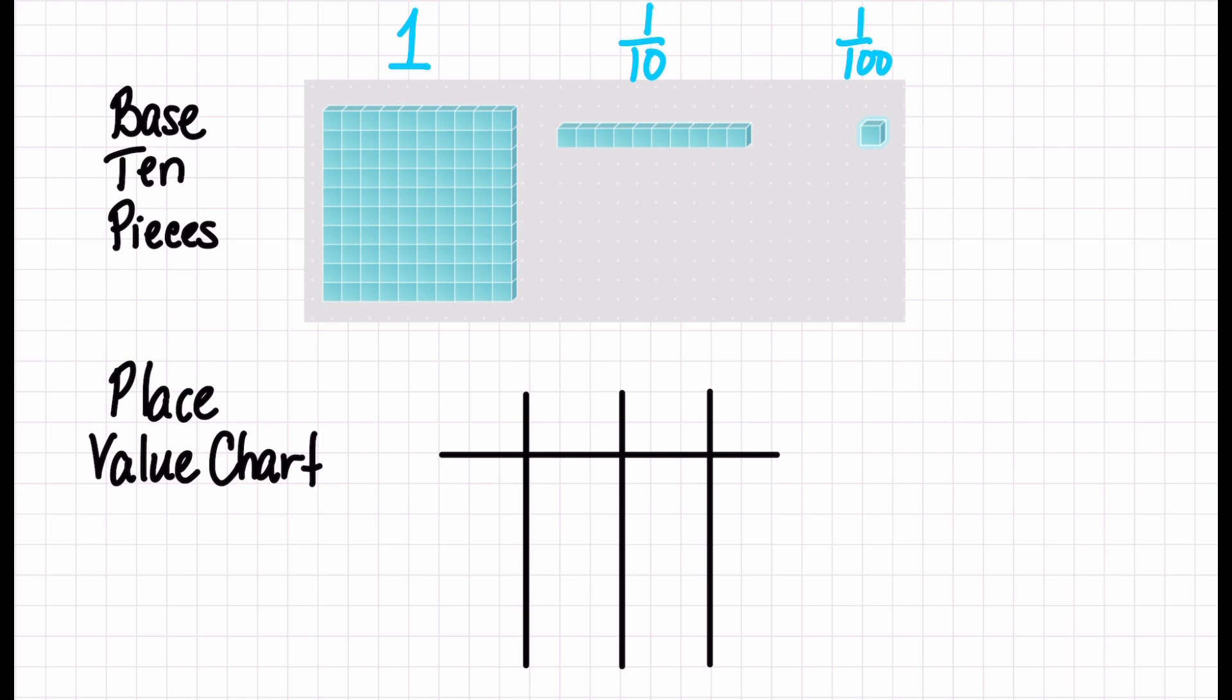I'm going to connect to something that we've been using a lot in classrooms, which are base-10 pieces. I love these pieces because it's really easy to see the fractional parts. So for today's example, and for fourth grade in general, we're going to use this flat piece to represent one, and our skinny pieces represent one-tenth.